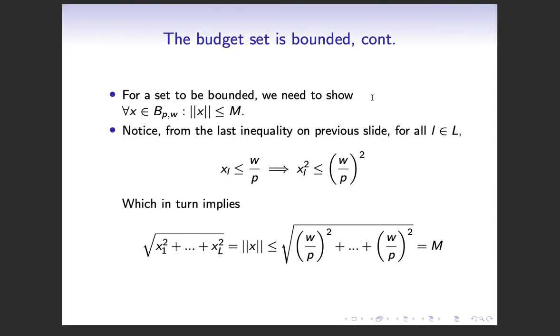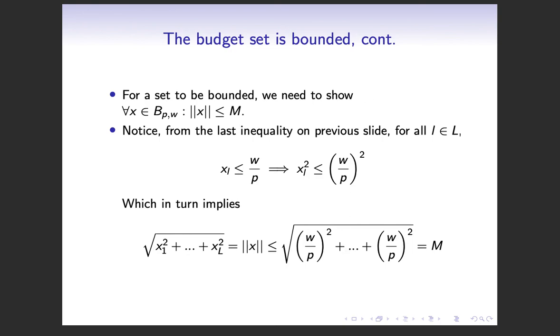So we've proved that the budget set is closed and bounded, which means it's compact, which means that the utility function attains its maximum on the compact set. So that's it.